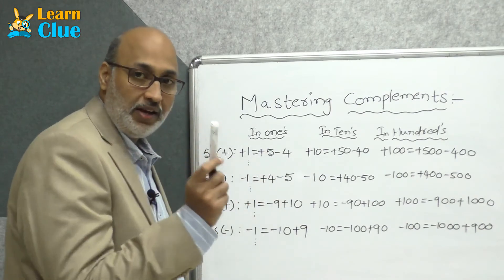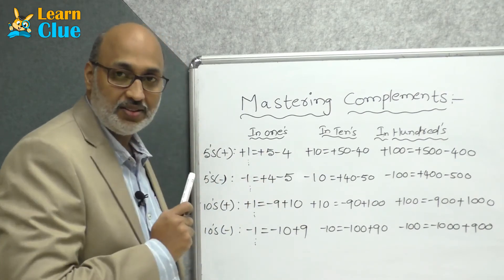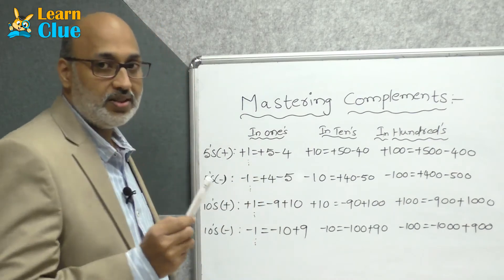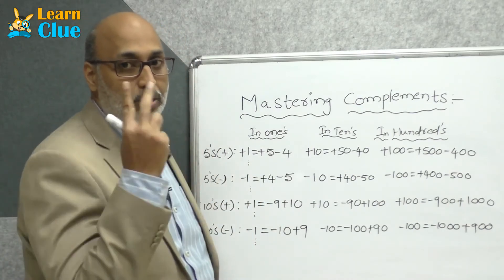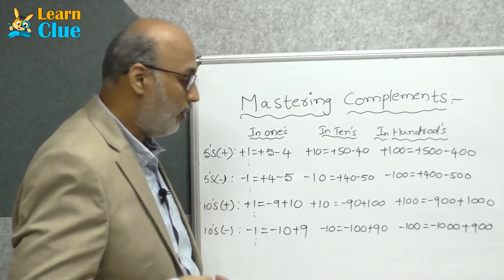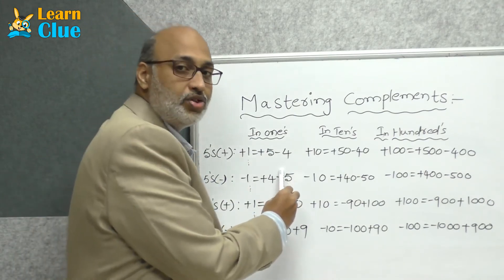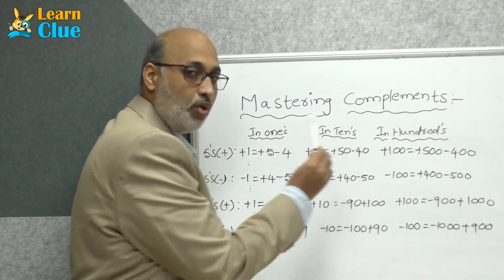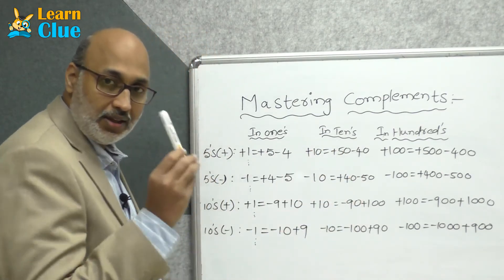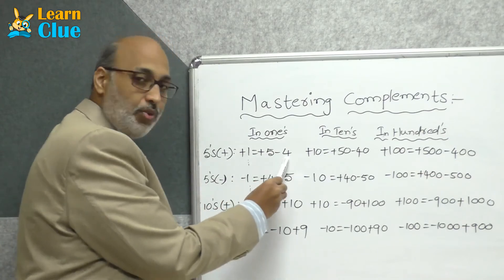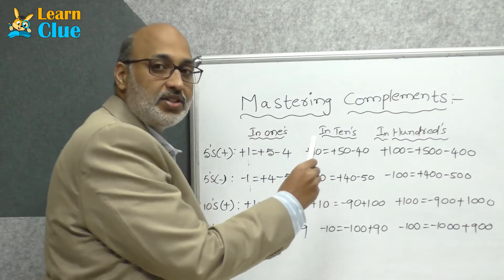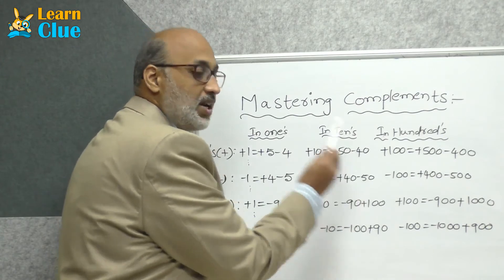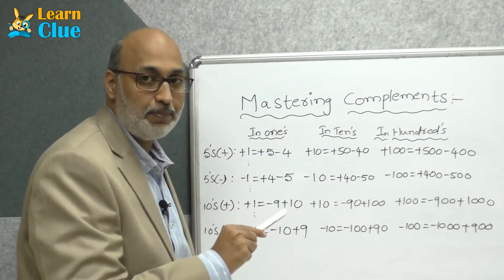For example, in fives complements you learned: +1 = +5 − 4, and this technique is applied in ones place. Now when we apply the same technique in tens place, the tens place consists of a two-digit number. So we place one more zero: +10 = +50 − 40. The technique is the same — +1 = +5 − 4 in ones place becomes +10 = +50 − 40 in tens place.